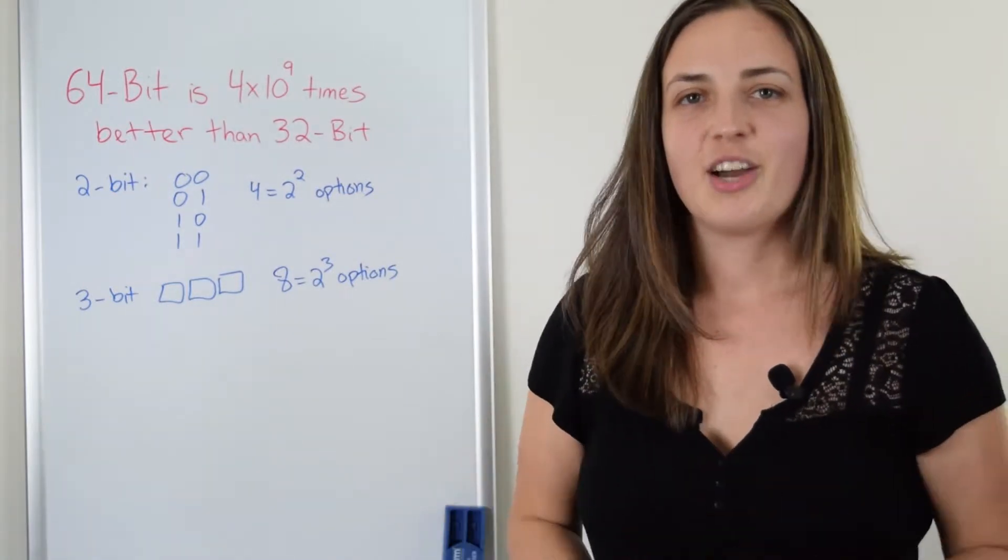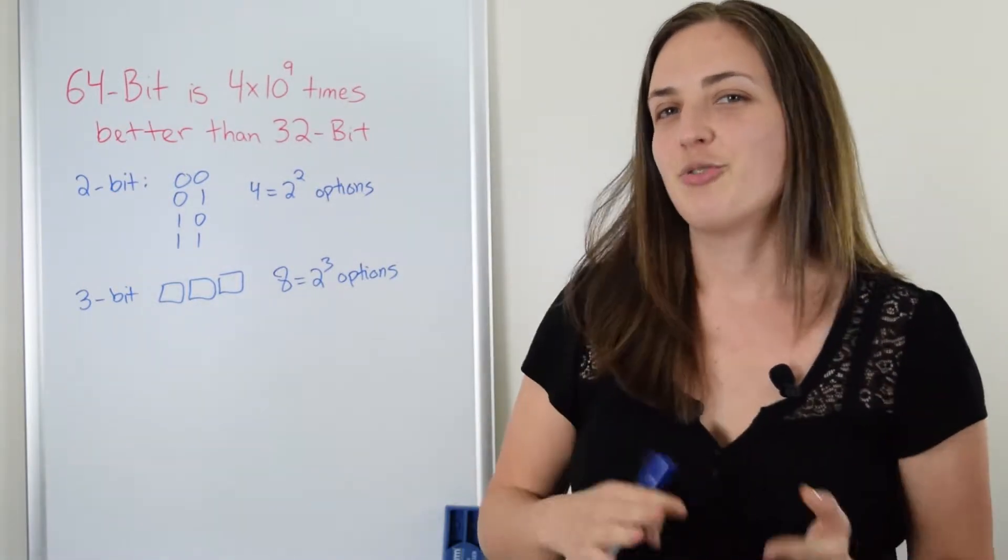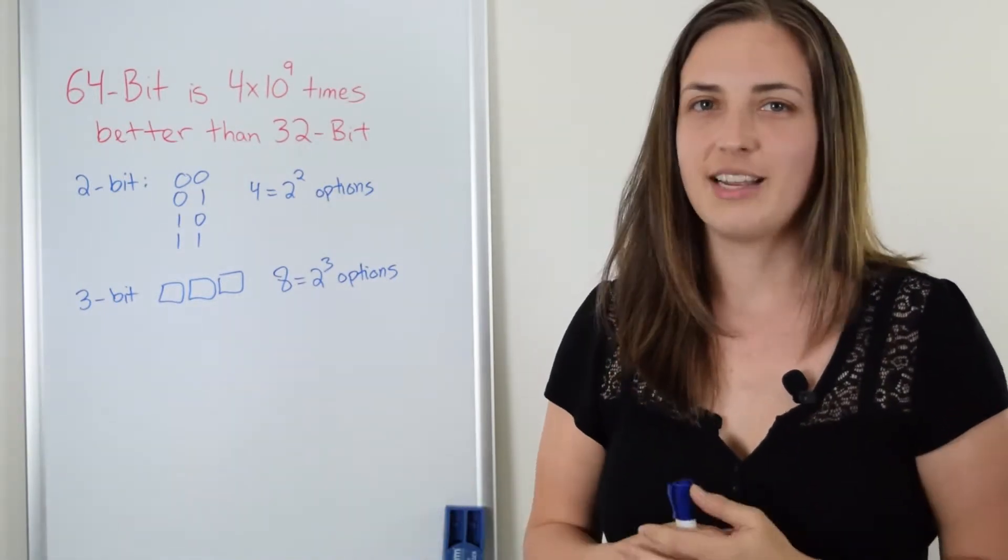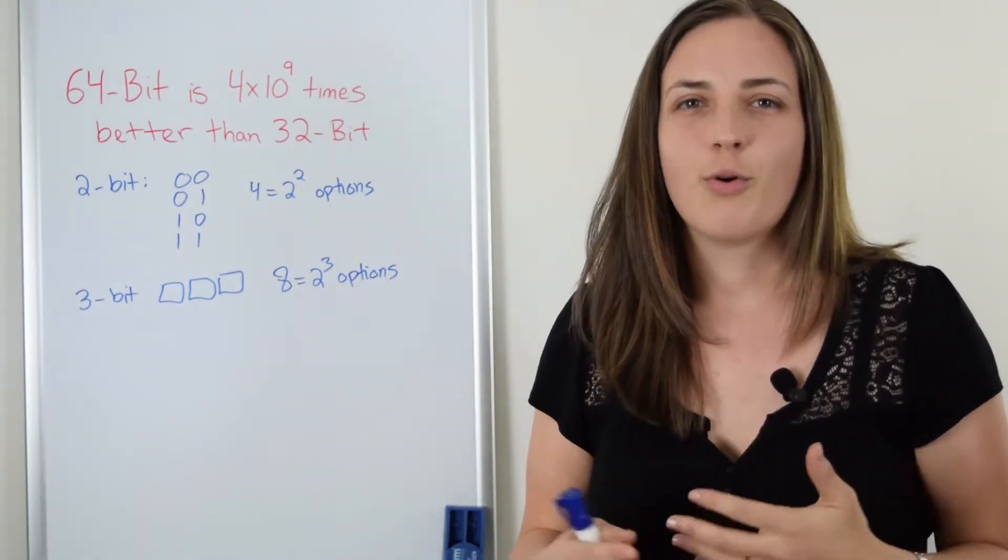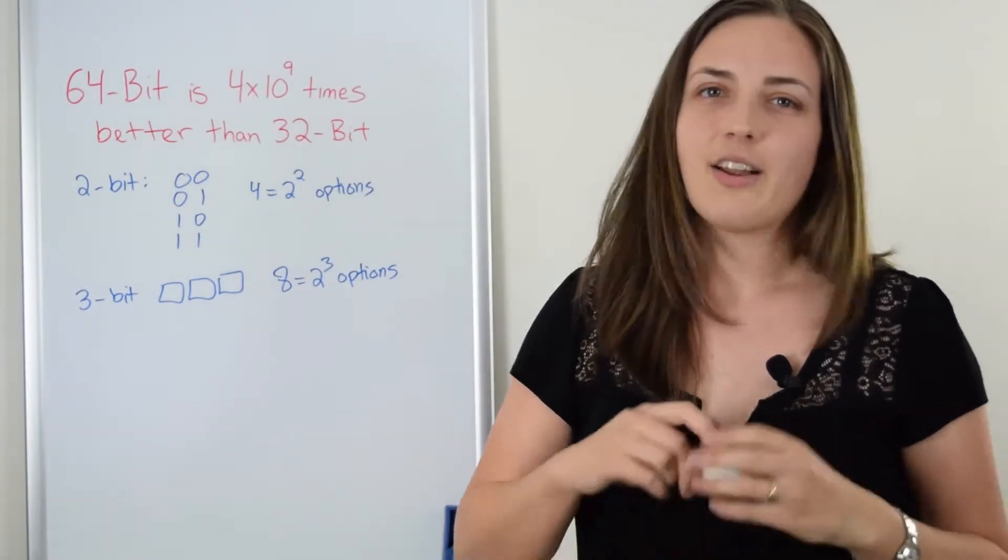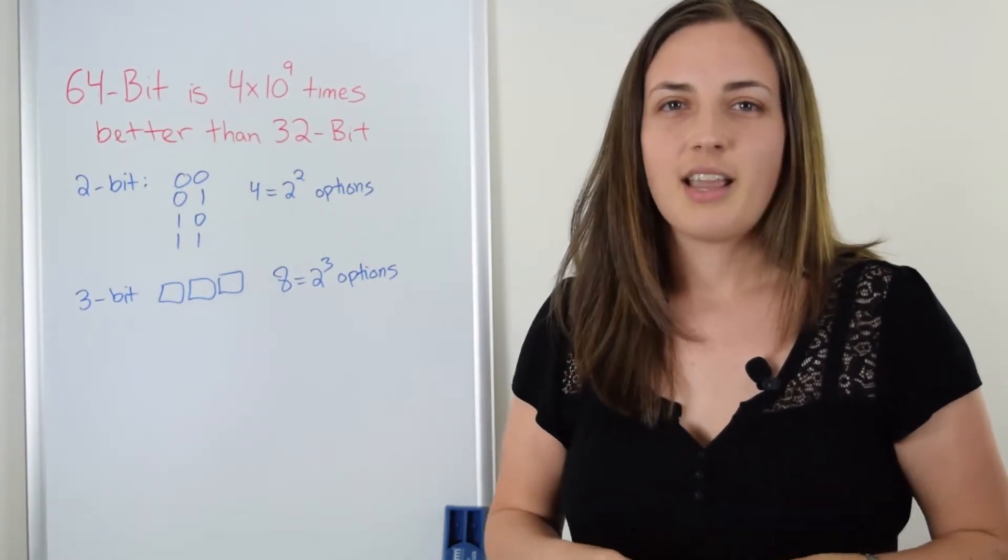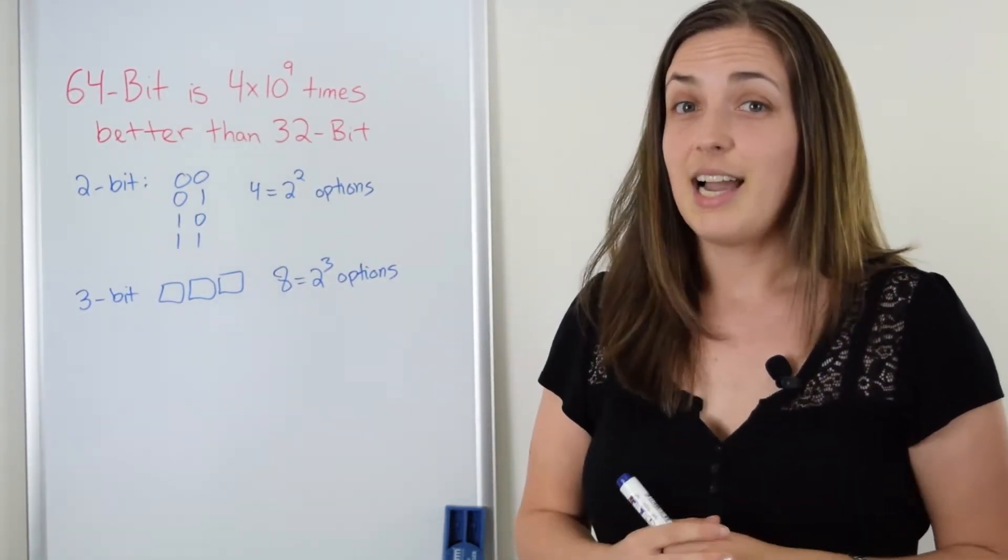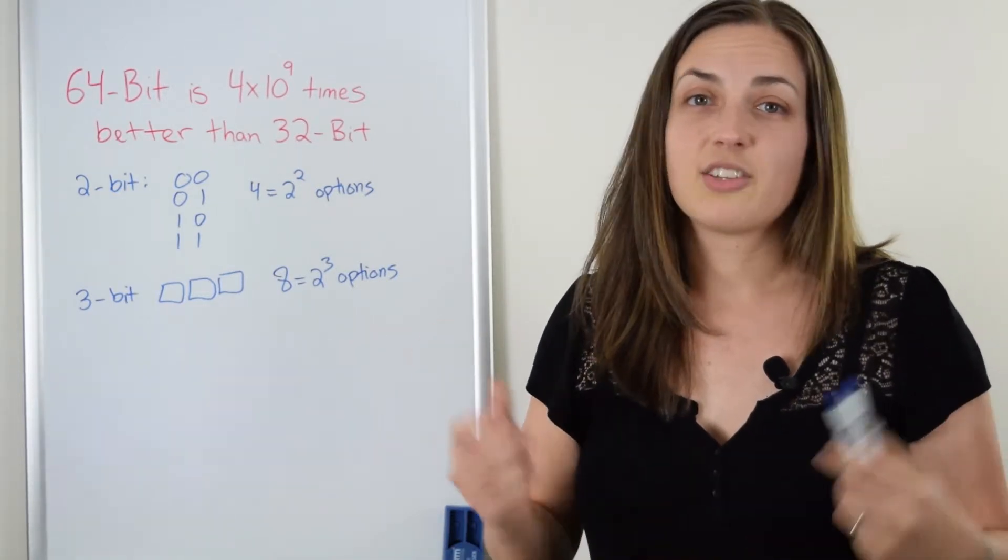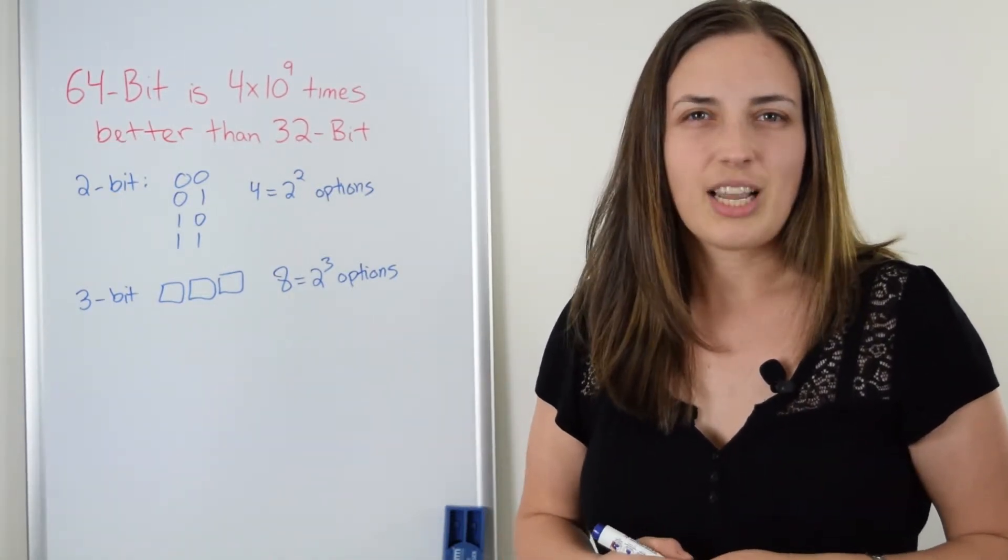Now, what I'm going to assume in this video is that when we compare two types of systems, we'll just describe how good one is or how much better one is based on how many more different zero-one sequences it could handle. So the three-bit system can handle eight and the two-bit system can handle four. So in this case, I would say that it's twice as good. The three-bit system is twice as good because it handles twice as much stuff. Let's check out the four-bit system.